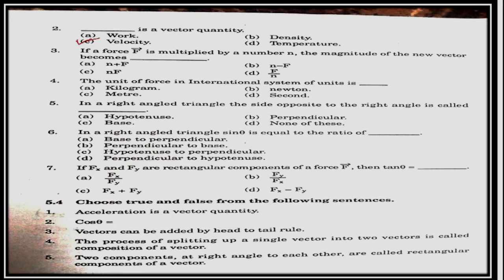If a force is multiplied by a number, then the magnitude of a new vector becomes, if we multiply the force by a number, then what will the magnitude of a new vector become? Nf. The unit of force in the international system of units is Newton. In a right angle triangle, the side opposite to the right angle is called hypotenuse.